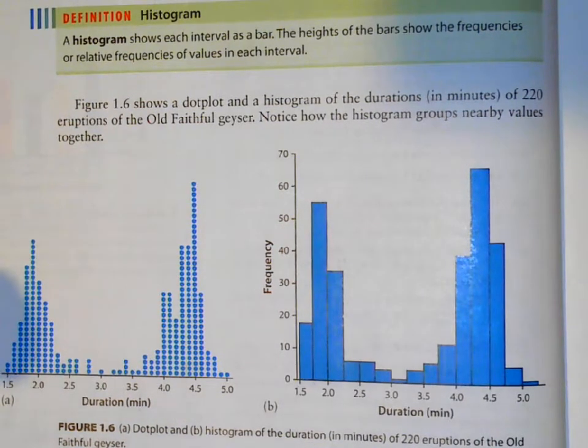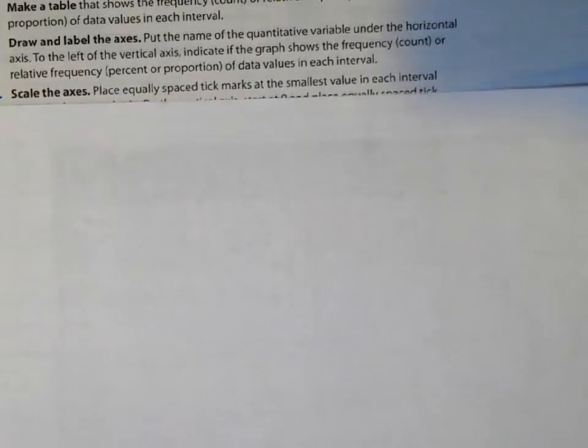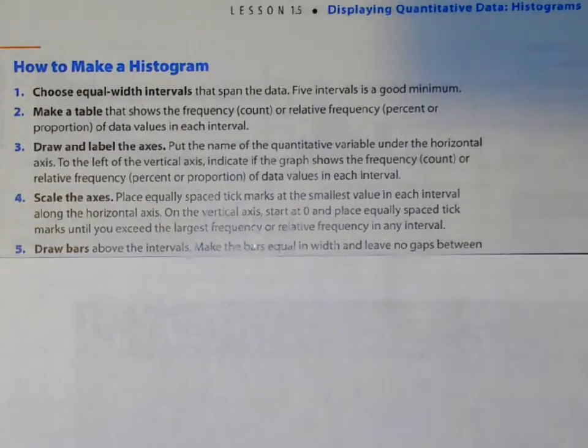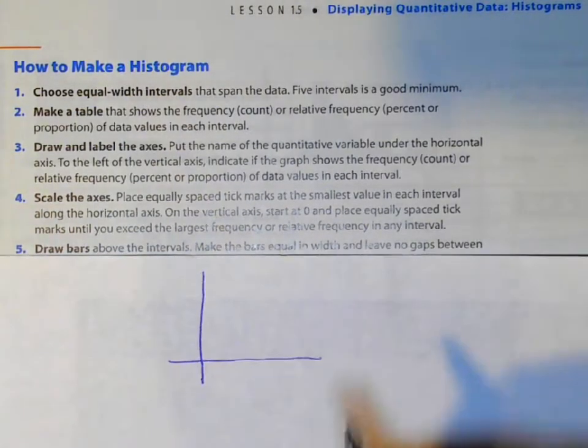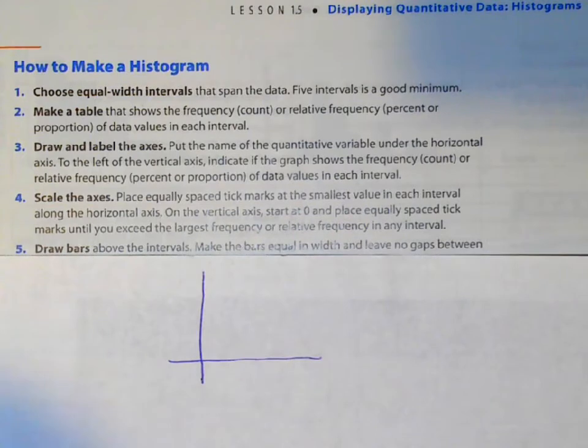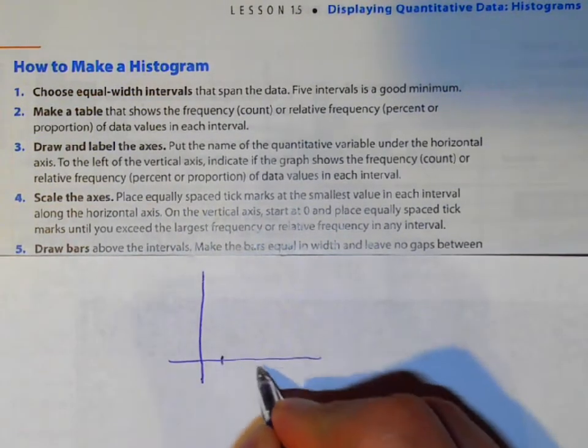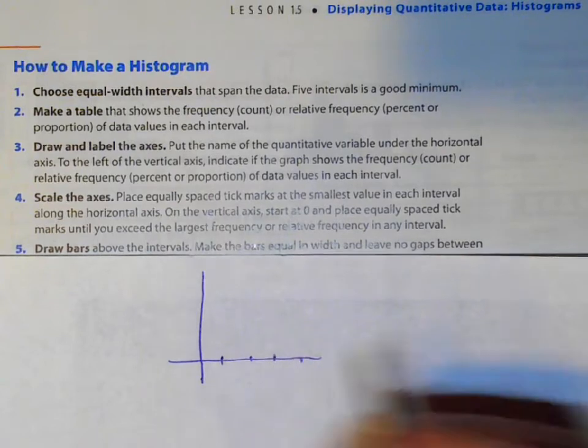So when you're making one, here's what you want to do. The first thing you want to do is you want to make your bars and you look at your data and you say, it's going from here to here. So you have to create your intervals. Four or five intervals would be good.